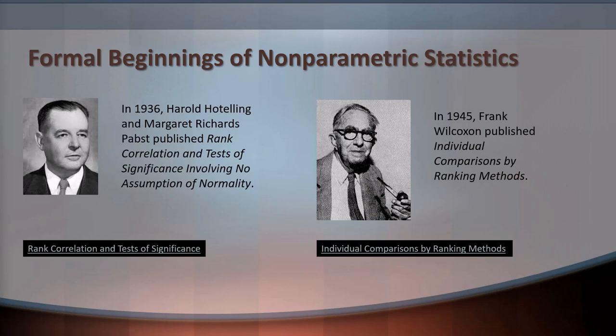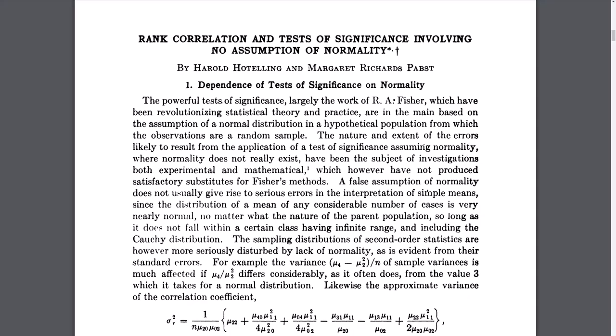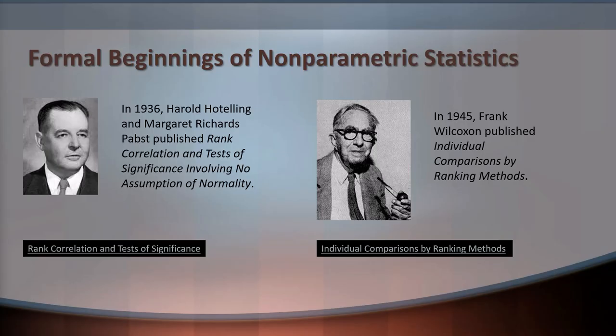The formal beginnings of more modern non-parametric statistics started around 1936, when Harold Hotelling and Margaret Richards Pabst published "Rank Correlation and Test of Significance Involving No Assumption of Normality." There you have a hint as to what we're going to do in non-parametric statistics: we're going to have no assumption of normality, which is different from what we often see in many parametric statistics.